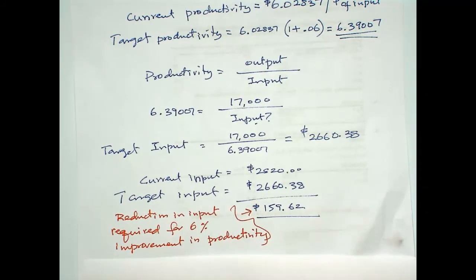So, to achieve a 6 percent improvement in productivity by keeping the output the same, you have to reduce the input by $159.62.